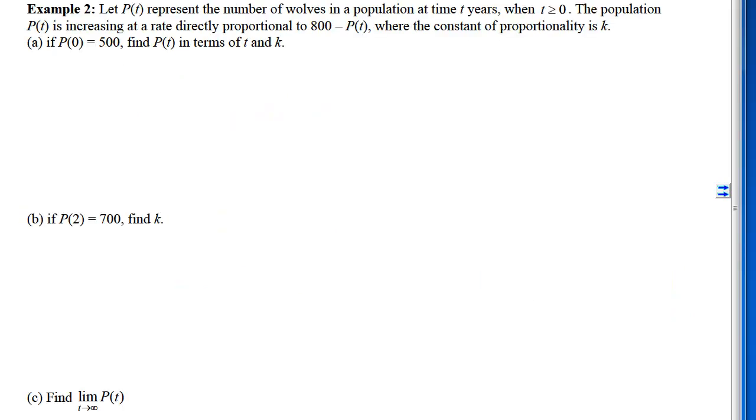With example 2, we have to do a bit of translating. We have to take these words and convert them into a differential equation that we will then solve using separation of variables. Let P(t) represent the number of wolves in a population at time t years, when t is positive. The population P is increasing at a rate, so that means my dP/dt, that is directly proportional to, so that means it equals a constant k times the thing it's proportional to, which is 800 - P, where the constant of proportionality is k.